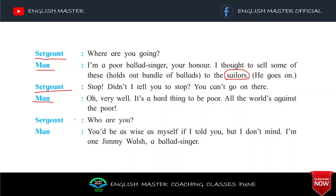Sergeant: 'Who are you?' Man: 'If you would be as wise as myself if I told you, but I don't mind.' Yaani ek sense of humor woh use kar raha hai. 'I am one Jimmy Walsh, ballad singer.' Woh bolta hai — mera naam hai Jimmy Walsh, main ballad singer hun. Sergeant: 'Jimmy Walsh, I don't know that name.' Man: 'Ah, sure, they know it well enough in Ennis. Were you ever in Ennis, Sergeant?' Sergeant: 'What brought you here?' Man: 'Sure, it's to the assizes I came, thinking I might make a few shillings here or there. It is in the one train with the judges I came.'